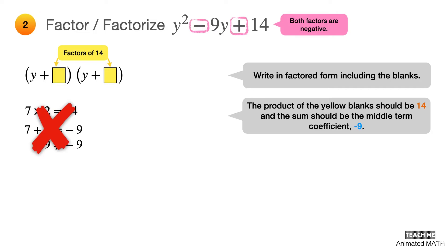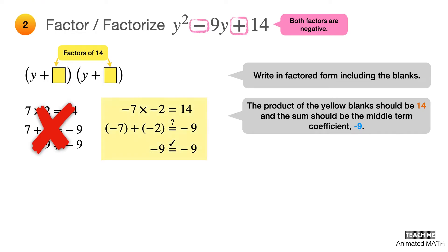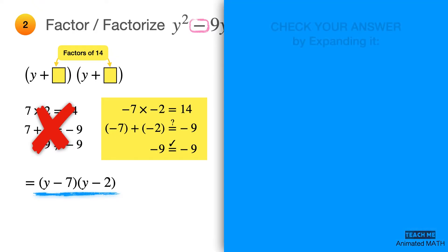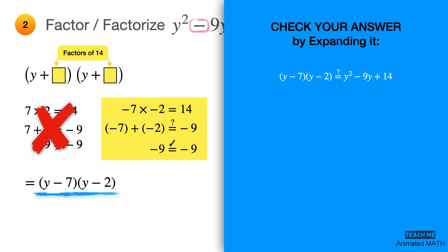Let's try negative 7 and negative 2. Negative 7 times negative 2 is equal to 14 as expected. And if you add negative 7 and negative 2, the sum is negative 9. The factors we are looking for are negative 7 and negative 2, which are both negative numbers. Fill in negative 7 and negative 2. The final answer is y minus 7 times y minus 2. Don't forget to check your answer by expanding it using polynomial multiplication as shown here.